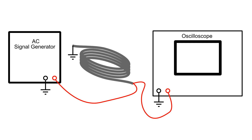And when we first take a look at the trace on the scope, you'll see an AC signal. And that effect that we just talked about is being produced in that coil.